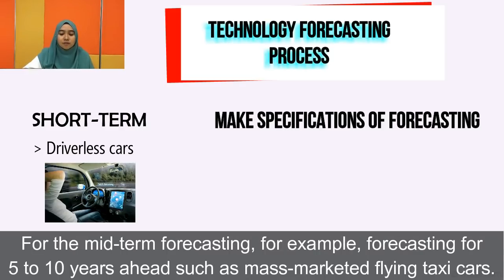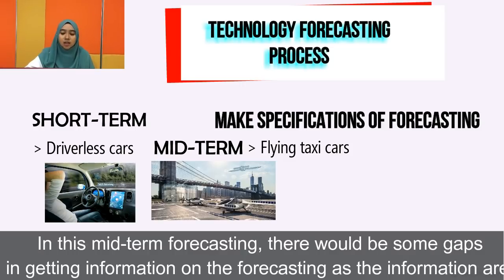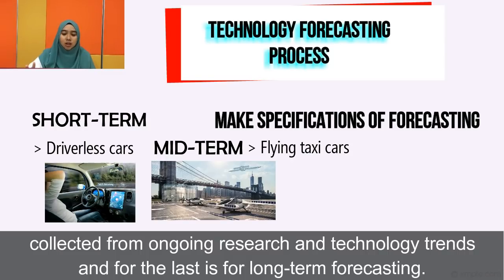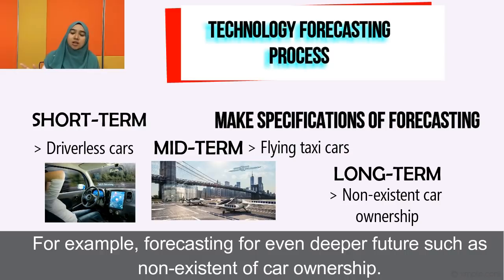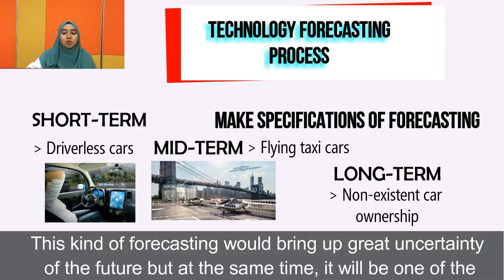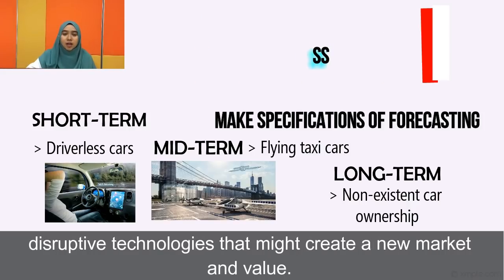For mid-term forecasting — for example, forecasting 5 to 10 years ahead such as mass-marketed driverless taxi cars — there would be some gap in getting information as data are collected from ongoing research and technology trends. For long-term forecasting — for example, the non-existence of car ownership — this kind of forecasting brings great uncertainty about the future, but at the same time it may be a disruptive technology that creates a new market and value.